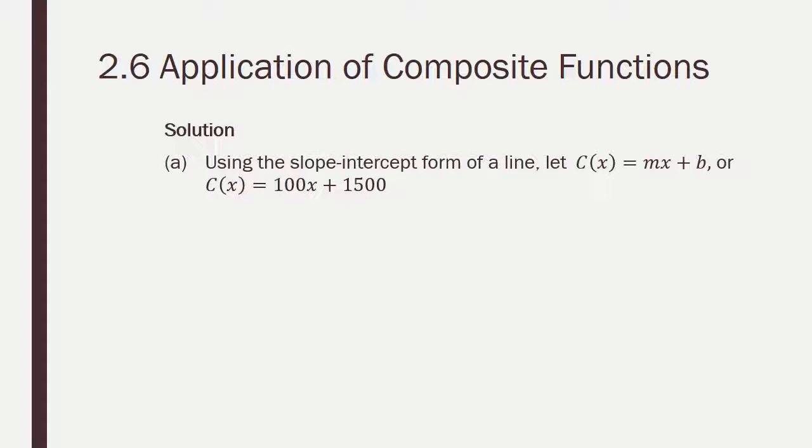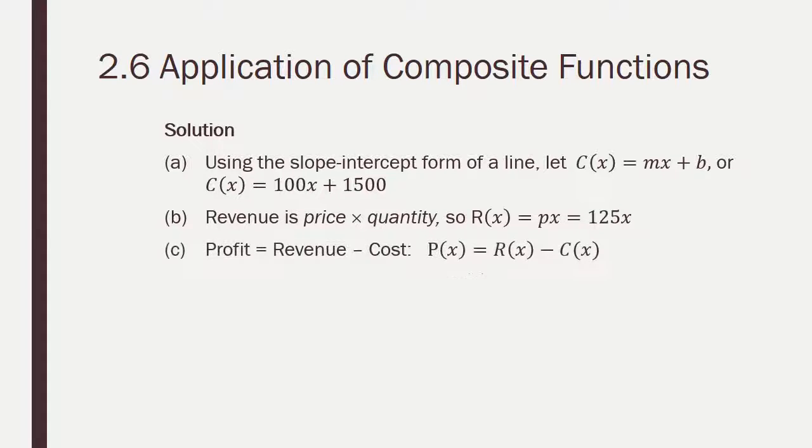So, we know that each device costs $100, plus there was $1,500 base amount in there, so 100x plus $1,500. They're being sold for $125 each, so revenue is $125x. The profit, we're going to subtract those two, revenue minus cost. So, we'll get $25x minus $1,500.